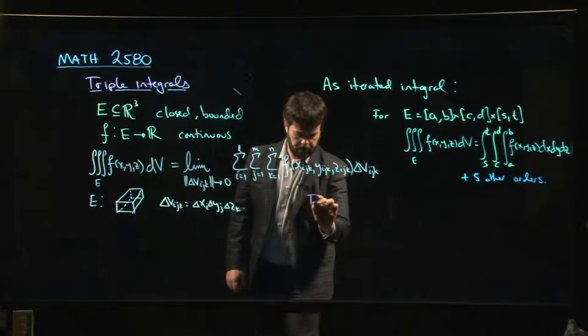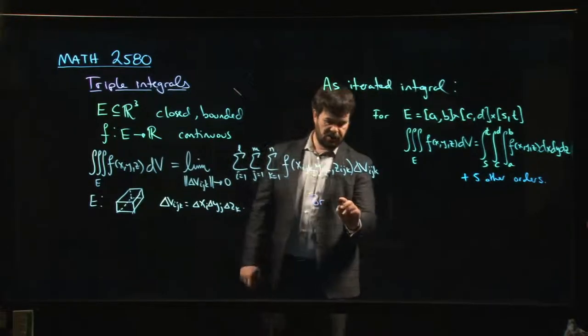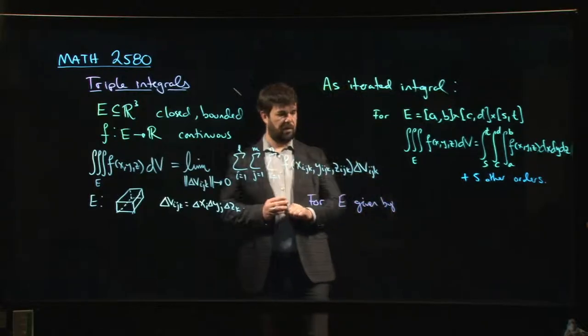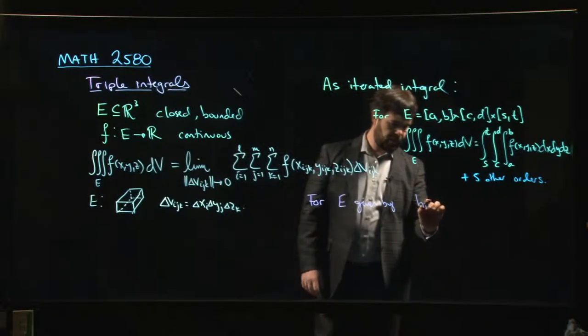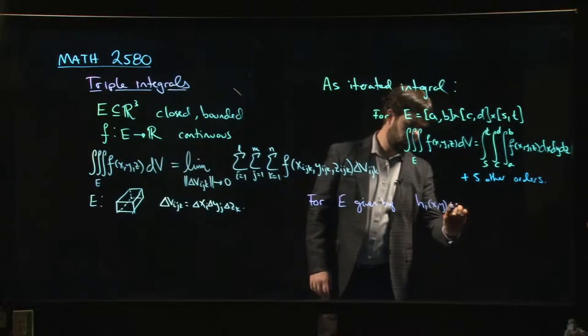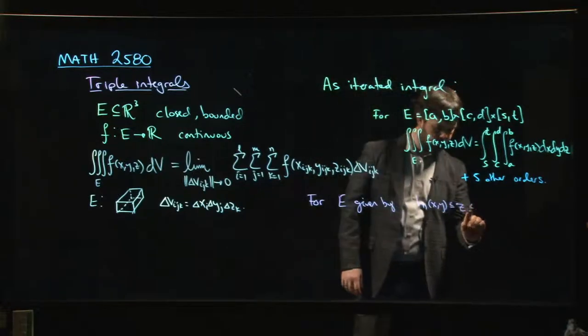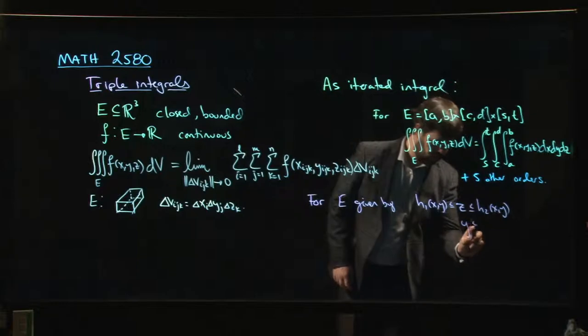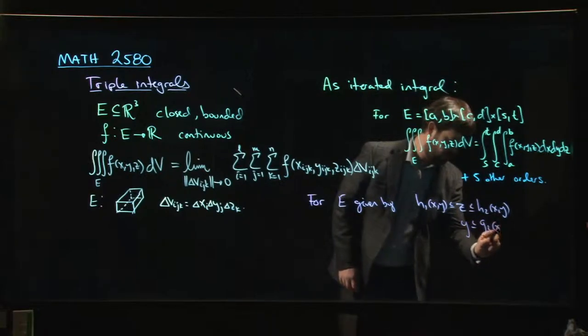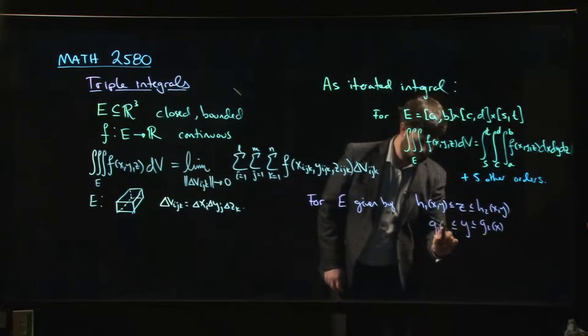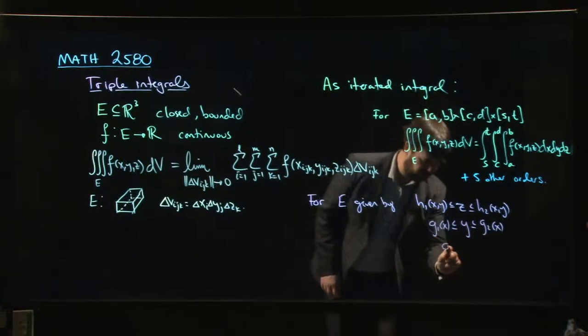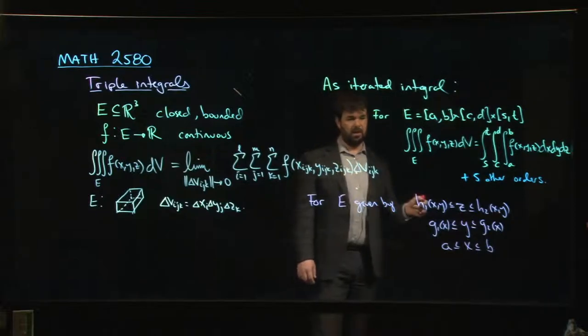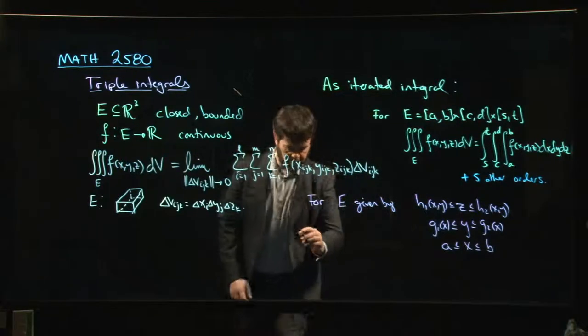So if your region E is given by something like, well, Z is bounded by a couple functions of X and Y. And then Y, in turn, is given by functions of X. And then X is bounded by some constants, let's say A and B. Well, if you have this set up here, then you can write down an integral that looks something like this.